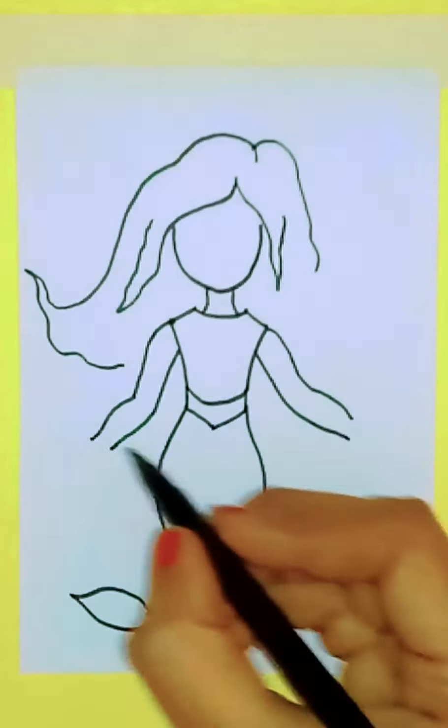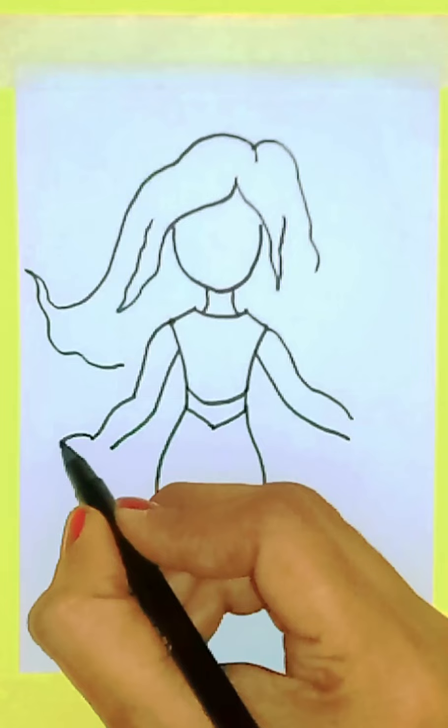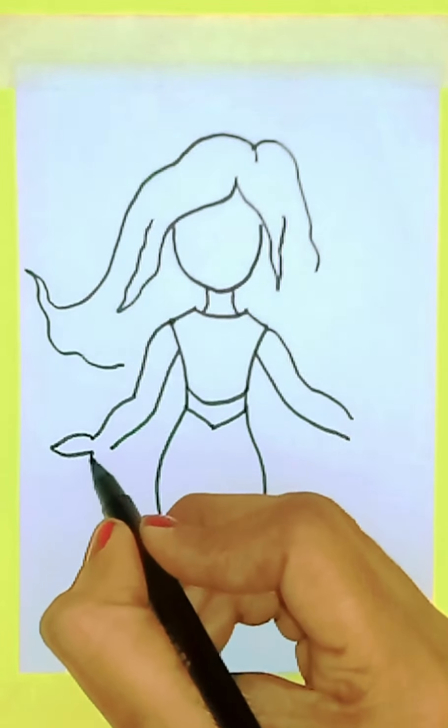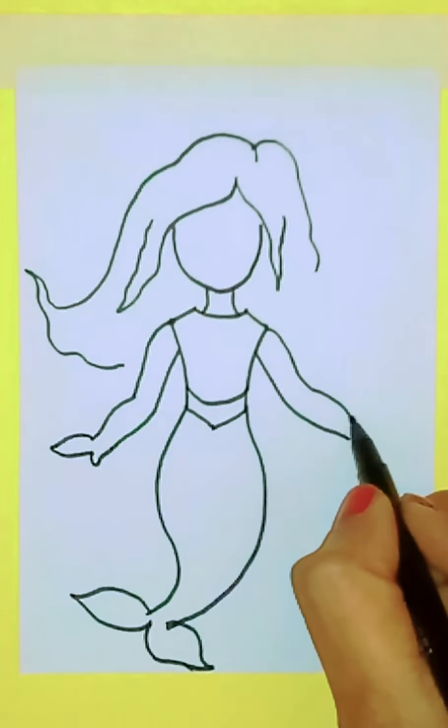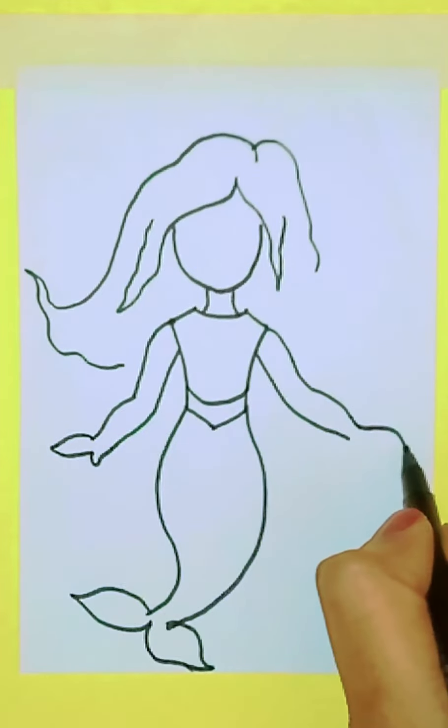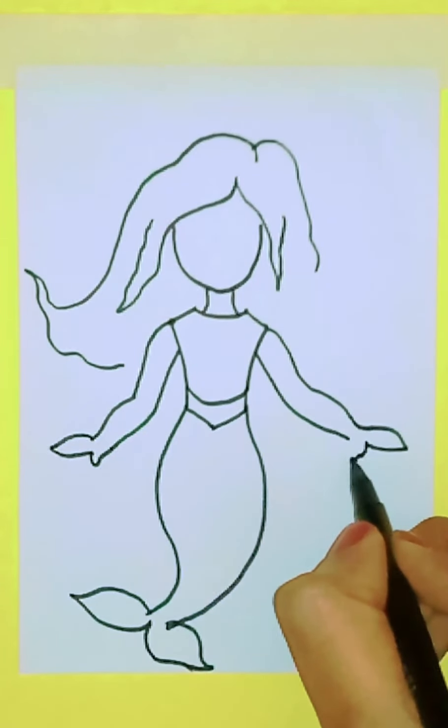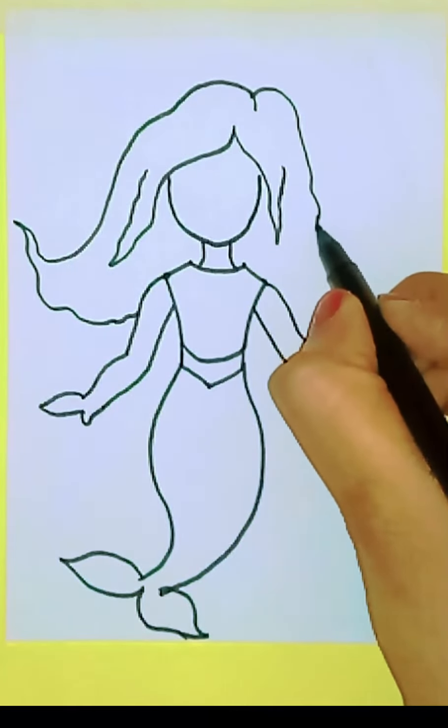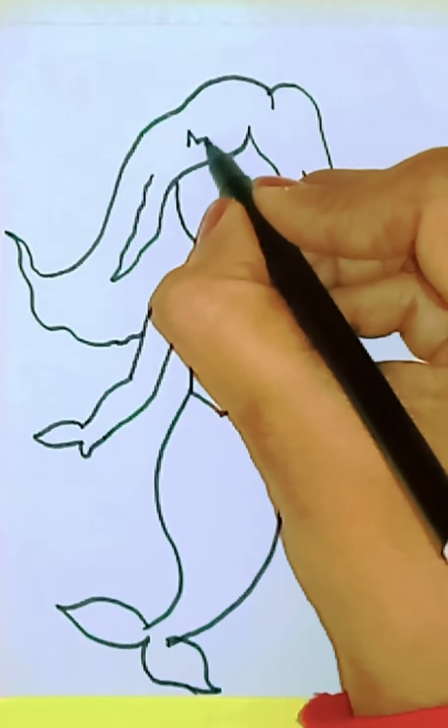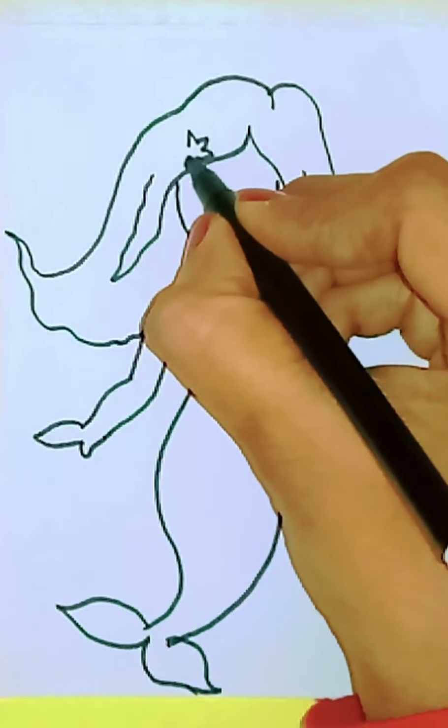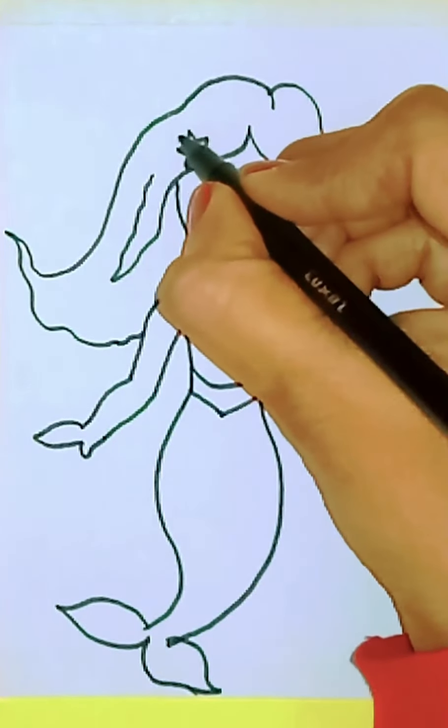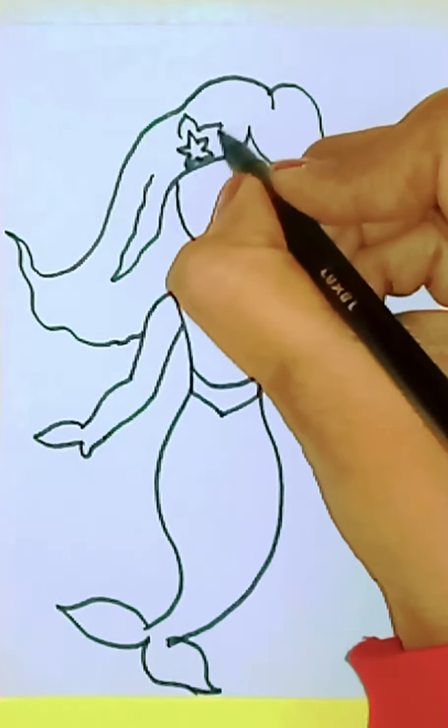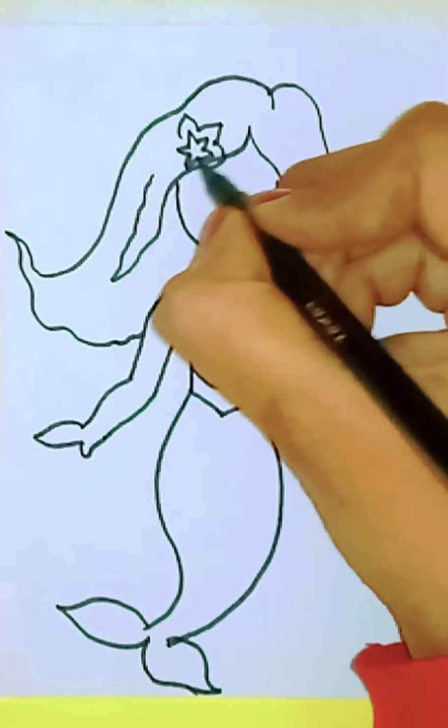Now let me draw her hands. Draw her fingers as shown. Once I have completed doing the hands, let me complete the detailing of her hair. Now I draw a star on her head just for extra detailing. You can color it with any color you want.